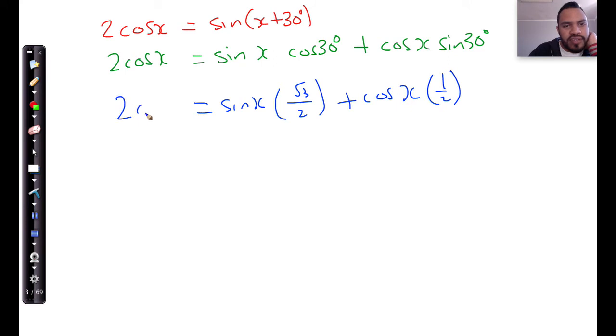So, here I've got two cos x. That's very clear. That remains there. Now, all we need to do is we've got two cos x, and I've got another cos x over here. So, I'm going to put them all on one side. So, I've got two cos x over here, minus a half cos x, because cos x times a half is the same as a half cos x. And that's equal to root 3 over 2 sine x.